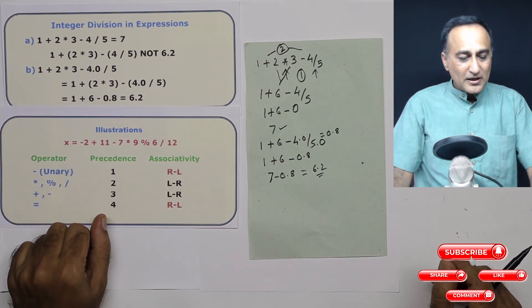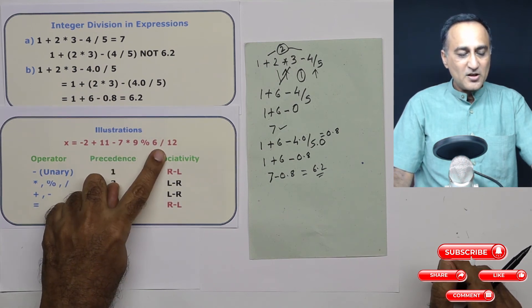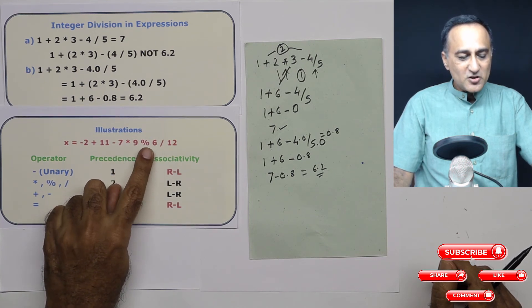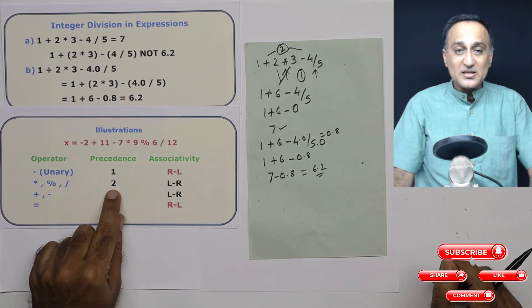Then after unary, I'm seeing plus minus multiplication, mod and division. So all of these fellows, multiplication, mod and division evaluated from left to right have got priority or precedence number 2.